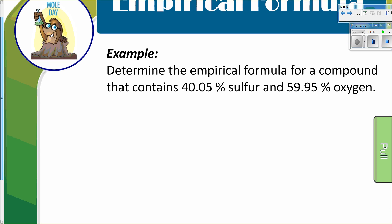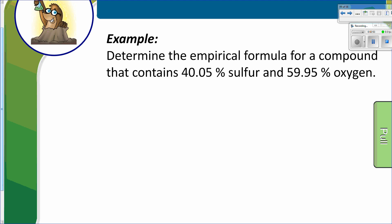Our first example: determine the empirical formula for a compound that contains 40.05% sulfur and 59.95% oxygen. Essentially, what's been given to you here is the percent composition for a formula you don't know, so you're going to be working backwards from percent composition. Remember, we're finding the empirical formula here — this is not the true molecular formula, just the lowest whole number ratio. The first thing you have to do is convert these percents to masses. The easiest way to do this is assume that you have a 100-gram sample — so 40.05% becomes 40.05 grams of sulfur, and 59.95% becomes 59.95 grams of oxygen. Always assume a 100-gram sample.